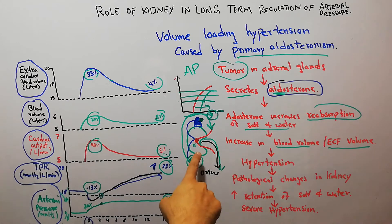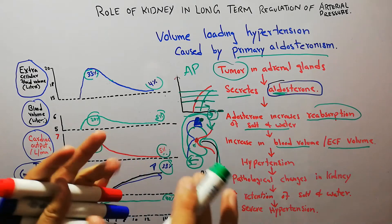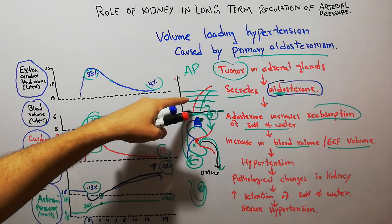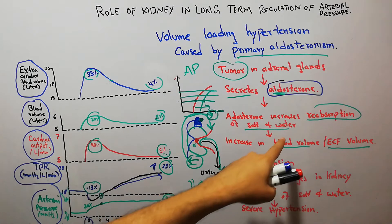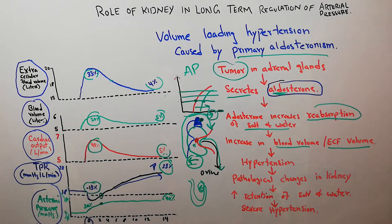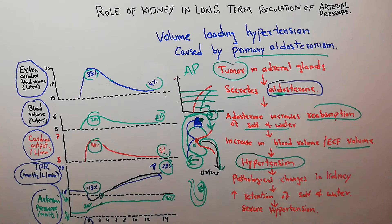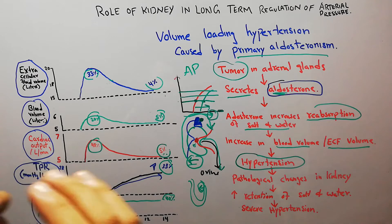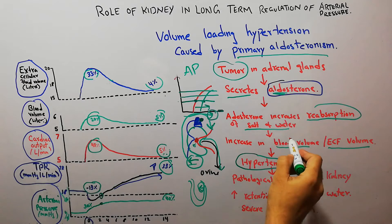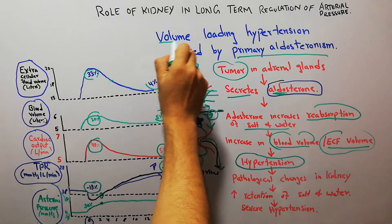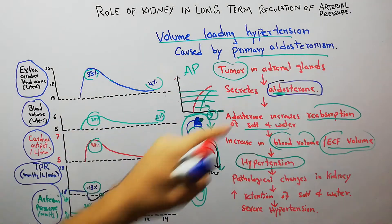When aldosterone increases, it leads to increased reabsorption of salt and water, causing accumulation equivalent to increased salt and water intake. Both blood volume and extracellular fluid volume increase, leading to hypertension. The high arterial pressure caused by increased fluid and blood volume is known as volume loading hypertension — and that is why it occurs in primary aldosteronism.